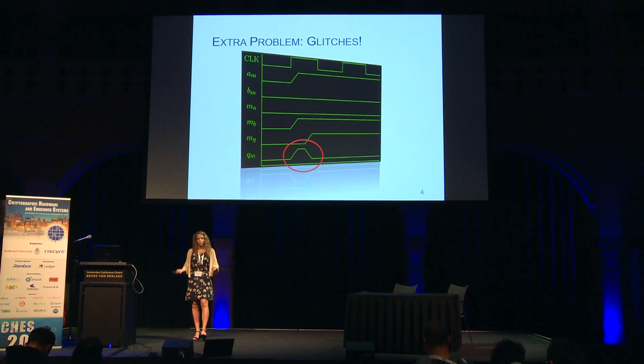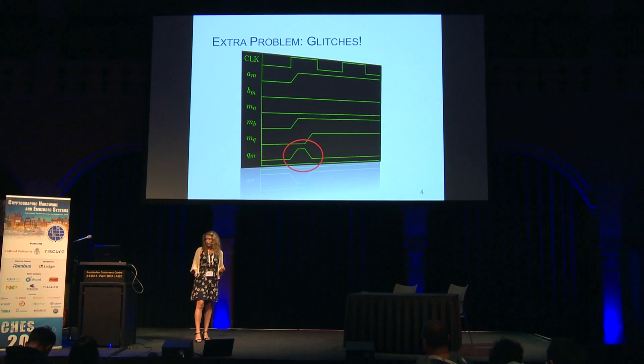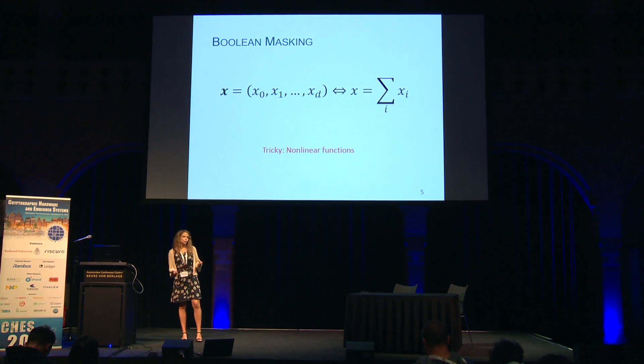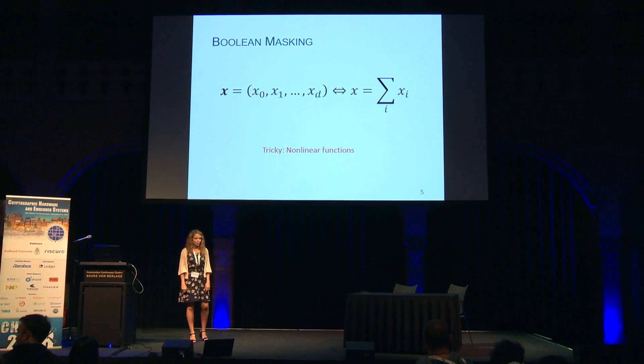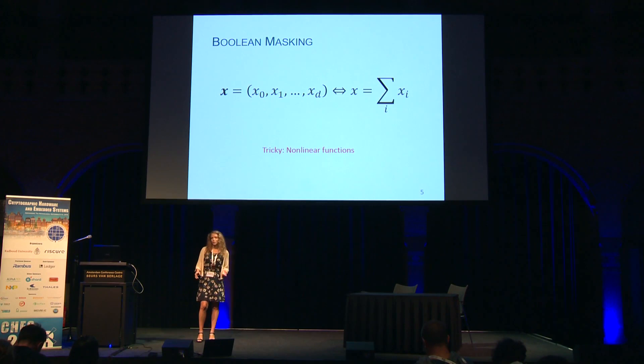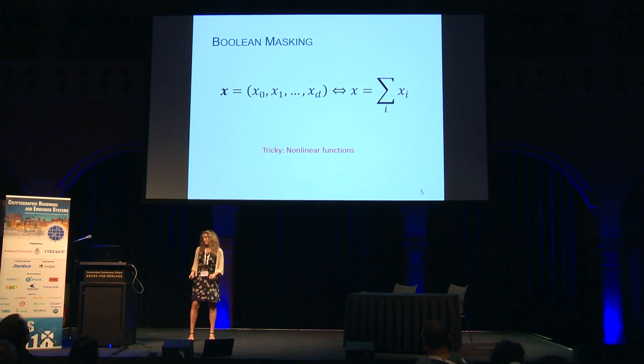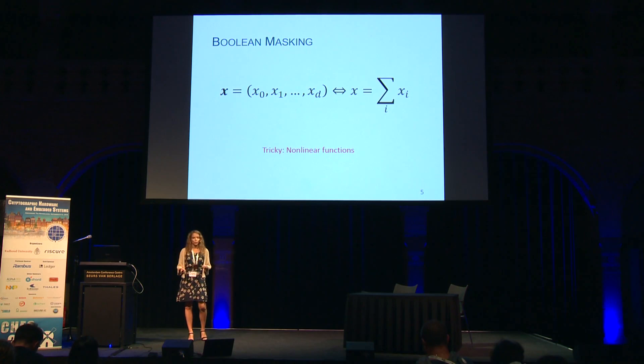Over the past few years, we've seen many works dealing with glitches, and many implementations secure in their presence. A lot of these use Boolean masking, where the sum of the shares equals the sensitive variable. That makes linear functions super easy to mask — no one's writing papers about that — but non-linear functions are very tricky. For example, the AES S-box is an inversion in a Galois field, and it's very tricky to implement.